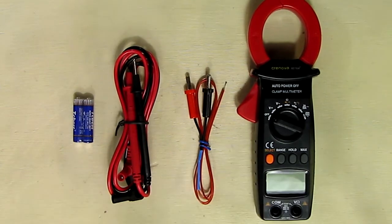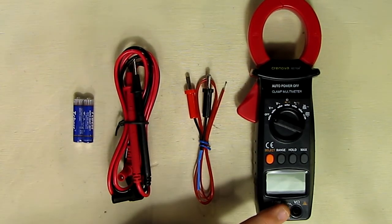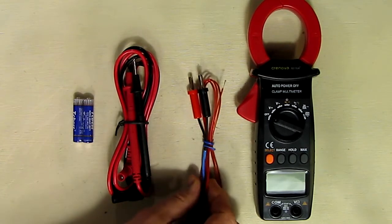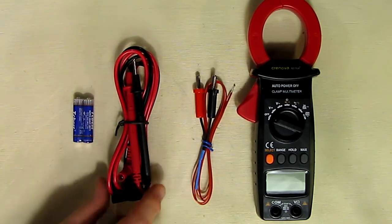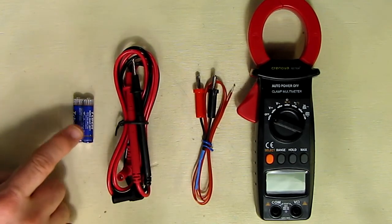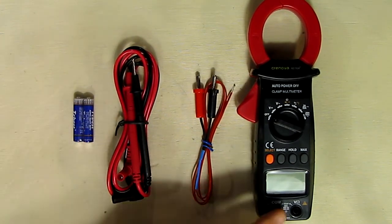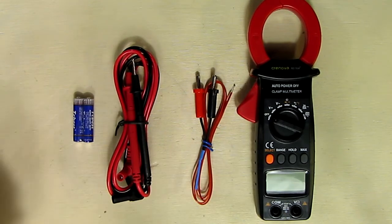This is what the unit looks like and it comes with a thermal sensor you plug in for temperature and probes and two AAA batteries. Now some of the unique features I'm going to show on this multimeter.